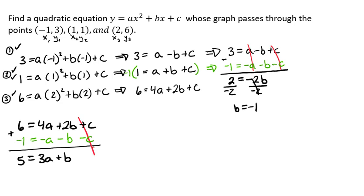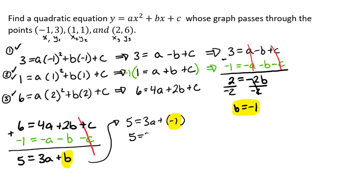At this point we're in a really good place because we already know what b is, so we can just plug that in to get our a value. Taking the equation five equals three a plus b and substituting b equals negative one, we add one to both sides to get six equals three a, then divide both sides by three to get a equals two.